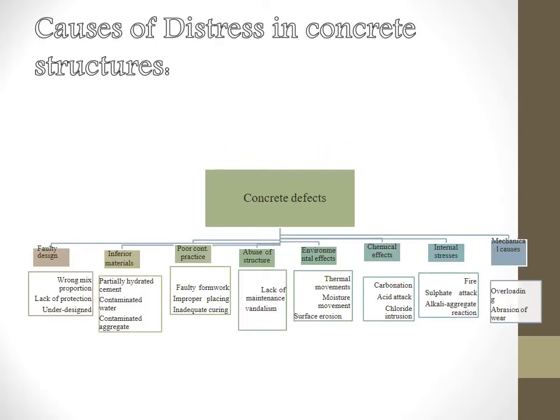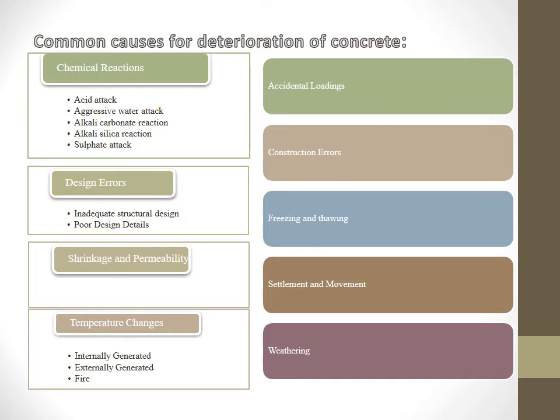Causes of deterioration or distress in concrete structures: there are eight causes. First is faulty design, second is inferior materials, third is poor concrete practice, fourth is abuse of structure, fifth is environmental effects, sixth is chemical effects, seventh is internal stress, and eighth is mechanical causes.